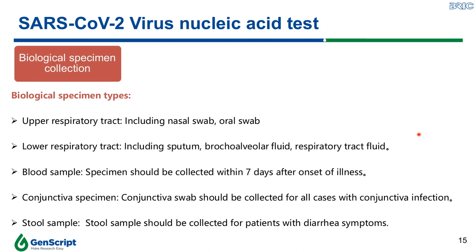The ACE2 receptor is highly expressed in the human lung, so results would be more accurate if you measured samples like bronchoalveolar fluid and respiratory tract fluid. However, this invasive collection method could cause discomfort to patients. Depending on the state of illness, blood samples or conjunctival swabs can also be collected for detection. Recent studies have shown that RNA extracted from stool can be used for detection, further supporting the fact that feces and saliva are two common transmission pathways for the virus.